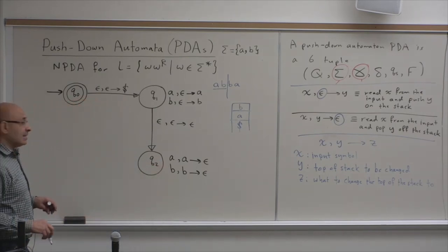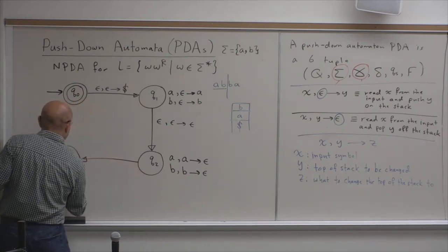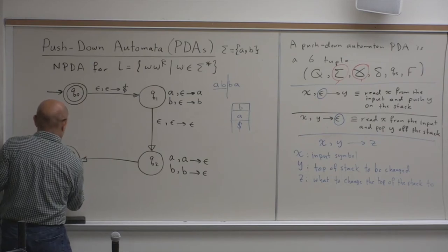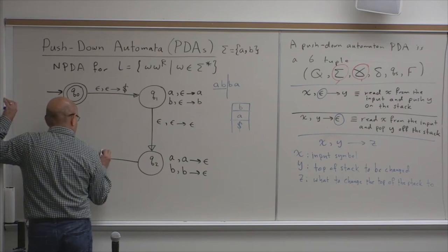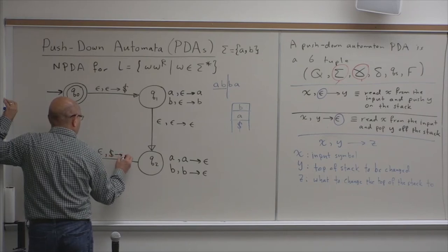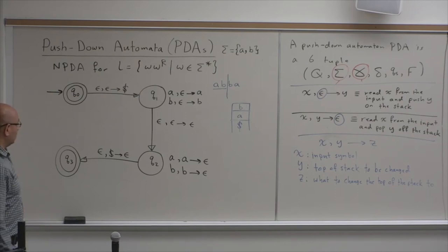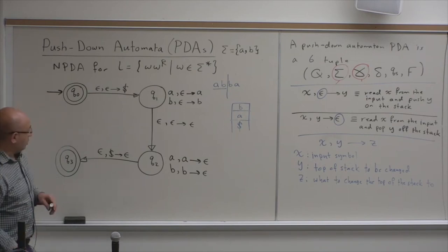Now, I accept. What's the transition that will put me in an accept state? Accept nothing in half dollars. Yeah. Exactly, at the input, I should have nothing. At the top of the stack, I should have a dollar sign, and I will pop it.